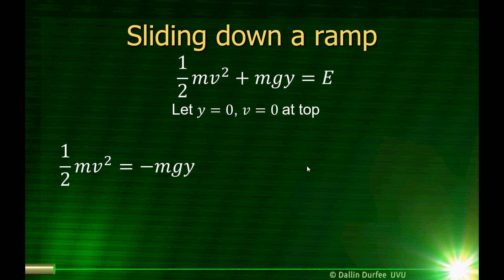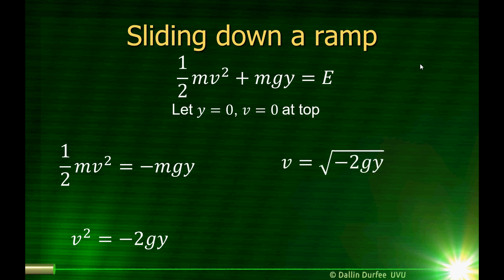One-half mv squared is equal to negative mgy — I just move the mgy to the other side. If y equals 0 and v equals 0, I plug those in and find that at the top, E equals 0. And E doesn't change — that's our constant. So one-half mv squared plus mgy will always equal 0 for this problem. I take the mgy to the other side, cancel out the m's, multiply by 2, take the square root, and find that the velocity at the bottom of the ramp is just equal to the square root of negative 2gy.